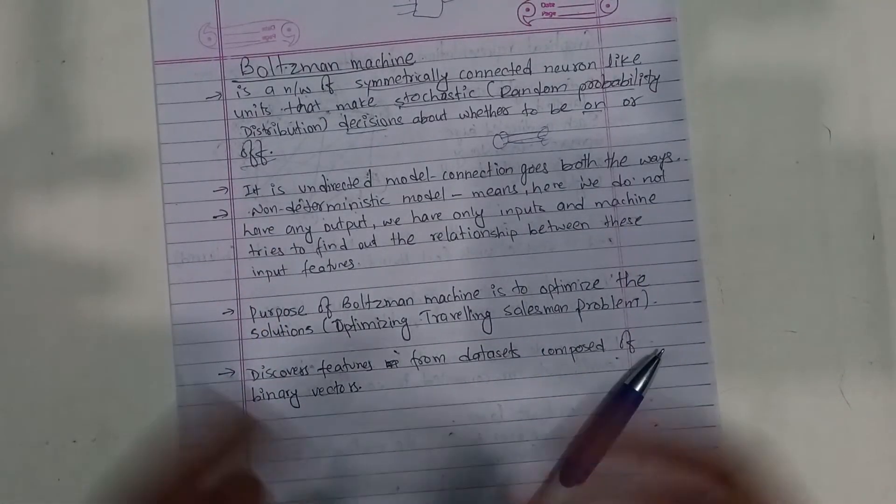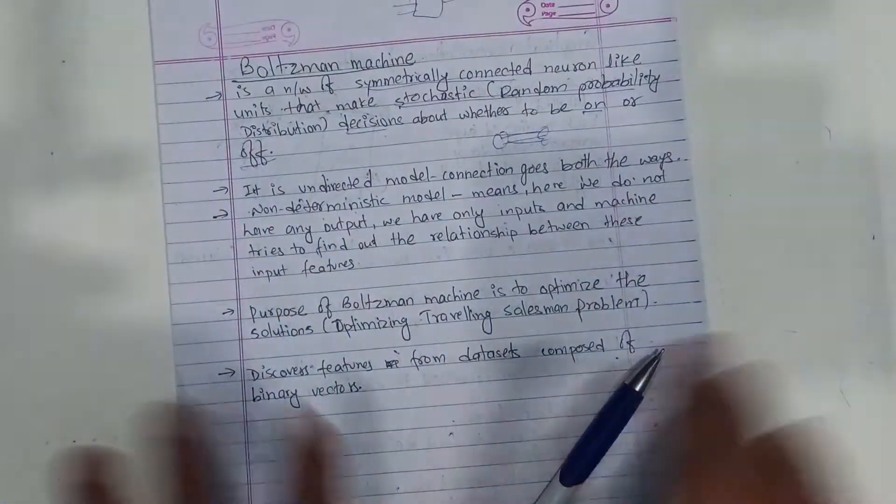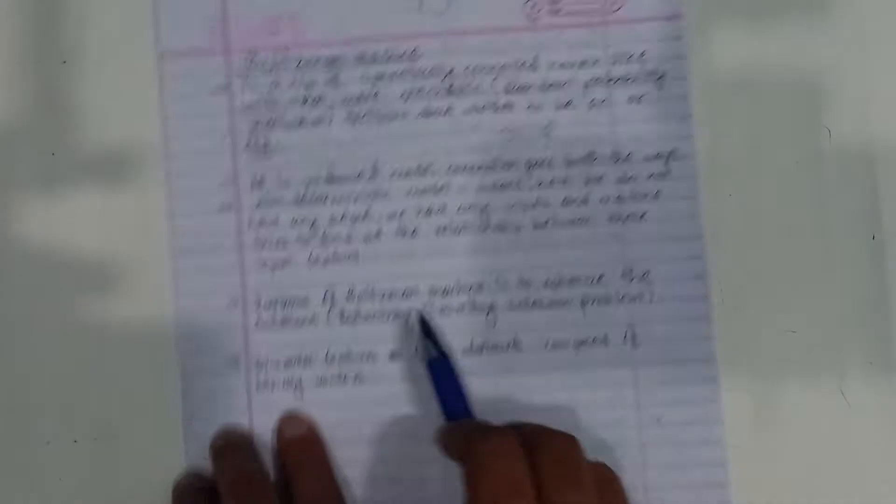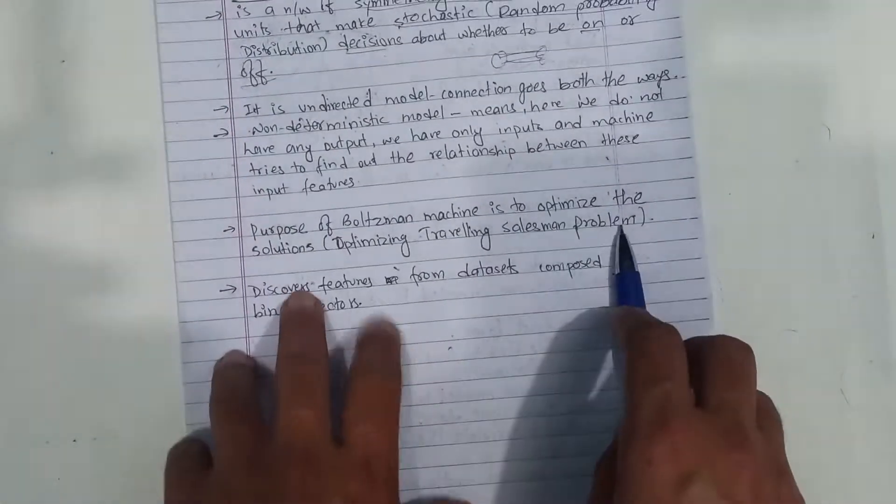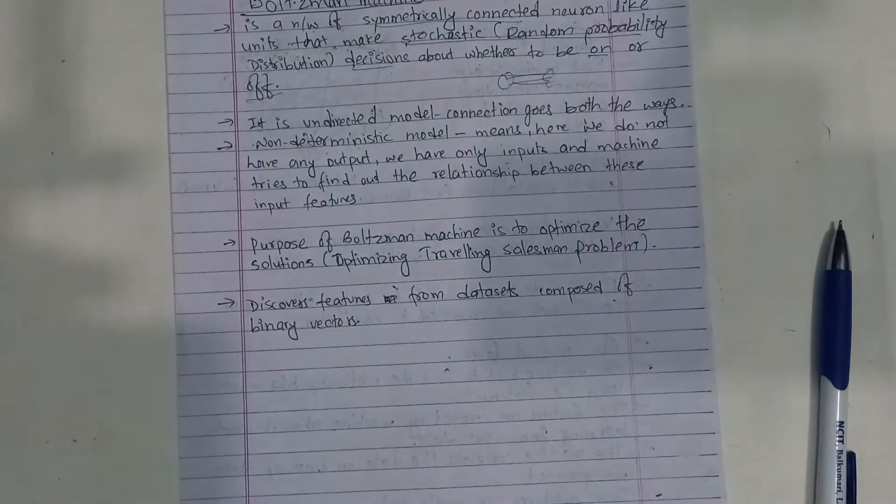We have only inputs and machine tries to find out the relationship between these input features. So input features, we have to find out the relationship. Purpose of Boltzmann machine is to optimize the solution.